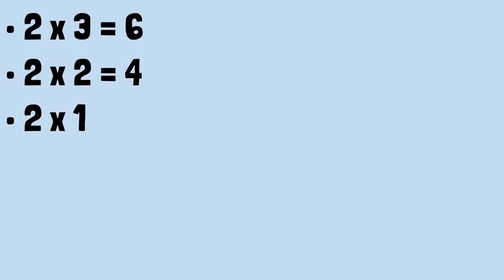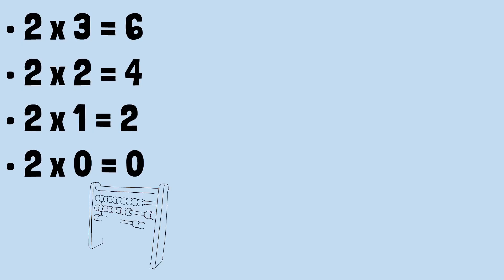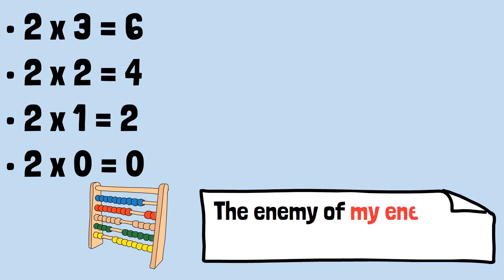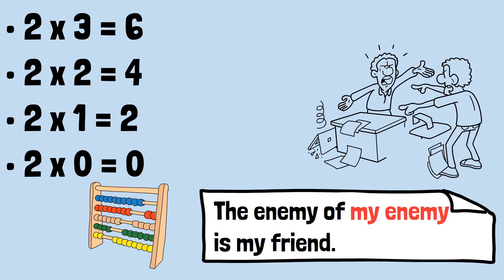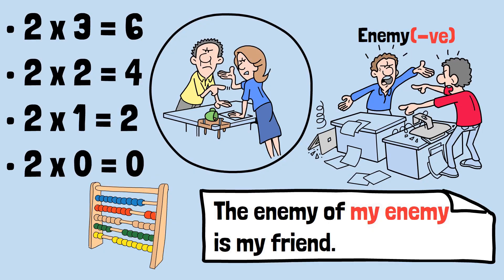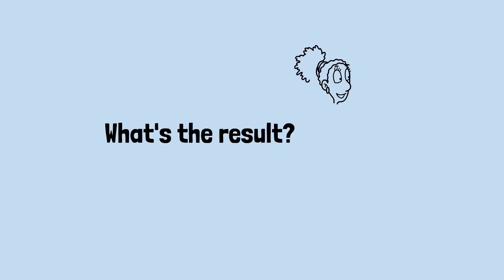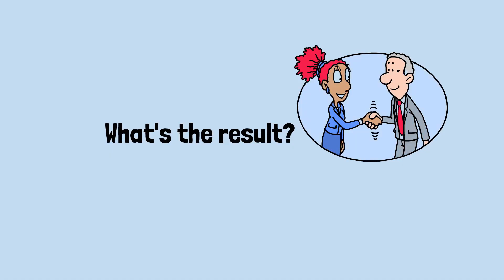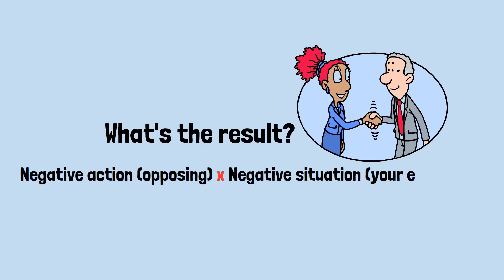While the pattern recognition approach shows us the mathematical necessity, let's ground this abstract concept in something more relatable. Think about the old saying, the enemy of my enemy is my friend. Imagine you're in a conflict situation. There's someone you don't get along with. Let's call them your enemy. This represents something negative in your life. Now, suppose there's a third person who also dislikes your enemy and actively works against them. In a sense, this third person is being negative toward your negative situation. What's the result? This third person's opposition to your enemy actually benefits you. They become your ally, your friend. The negative action, opposing, applied to your negative situation, your enemy, creates a positive outcome, gaining an ally.